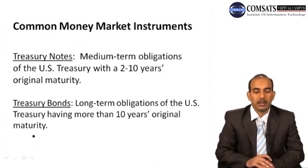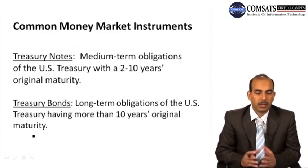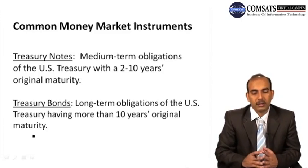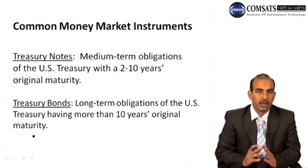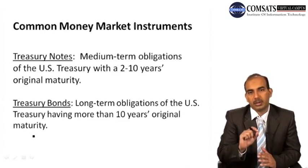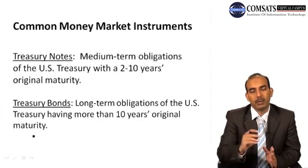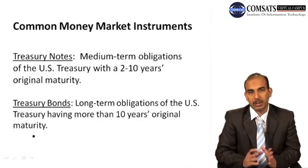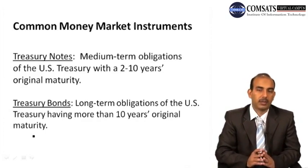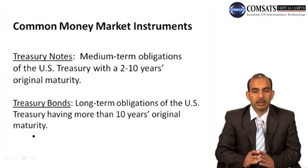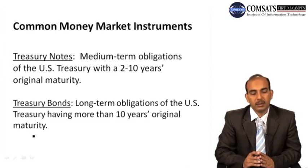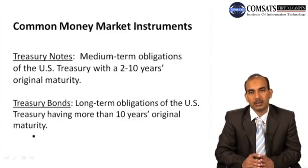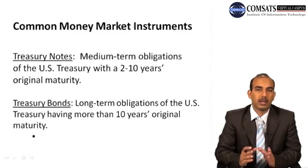Now let's look at other common money market instruments. Treasury notes are medium-term obligations of the US Treasury with two to ten years of original maturity — a minimum of two years and a maximum of ten years — and they earn interest. Treasury bonds are long-term obligations of the US Treasury with more than ten years of original maturity. Treasury bonds may carry an interest or may be sold at a discount, and at maturity the investor receives the face value.